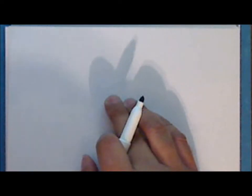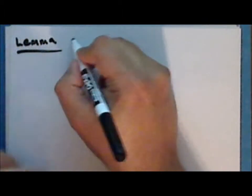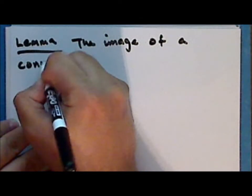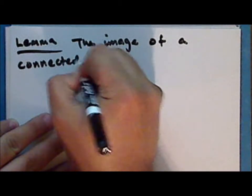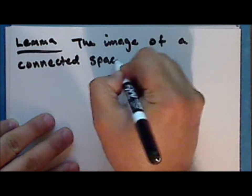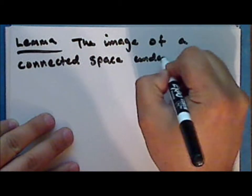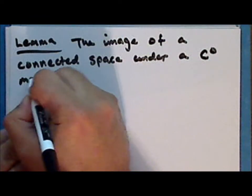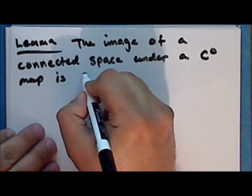So next we'll begin to consider connectedness in a product topology. First we'll prove a lemma: the image of a connected space under a continuous map is connected.